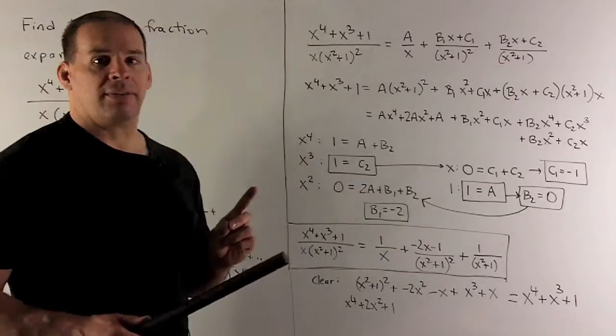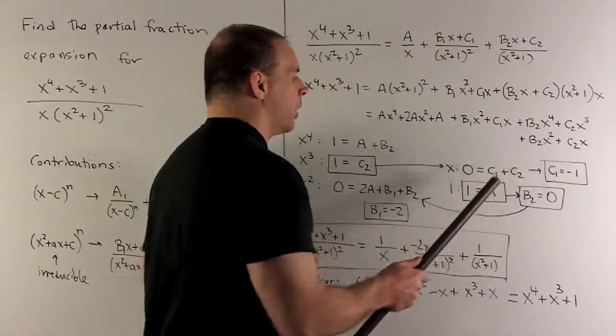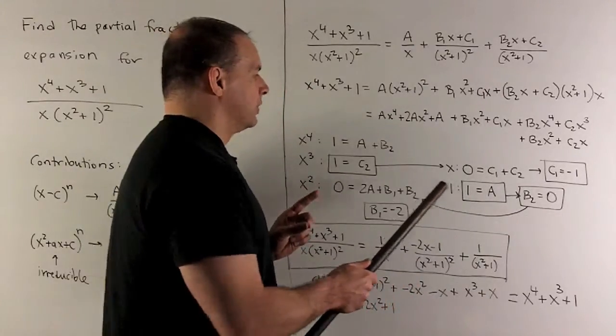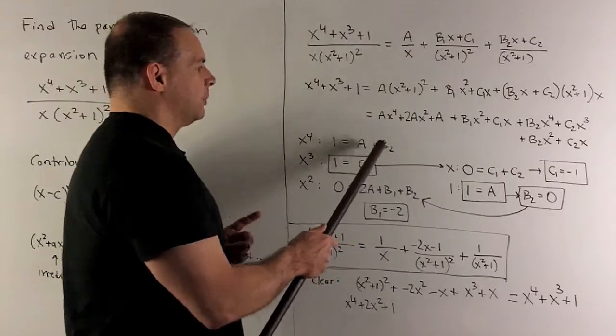Now let's see what we have. Okay. So we have c2 is 1, we solve for c1 equals minus 1, and we have A equals 1. So that means if we take A equals 1, put it into our first equation, that gives me b2 equals 0.